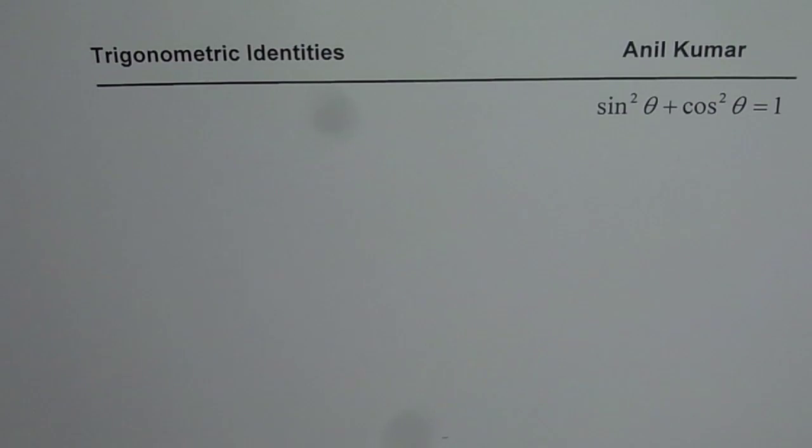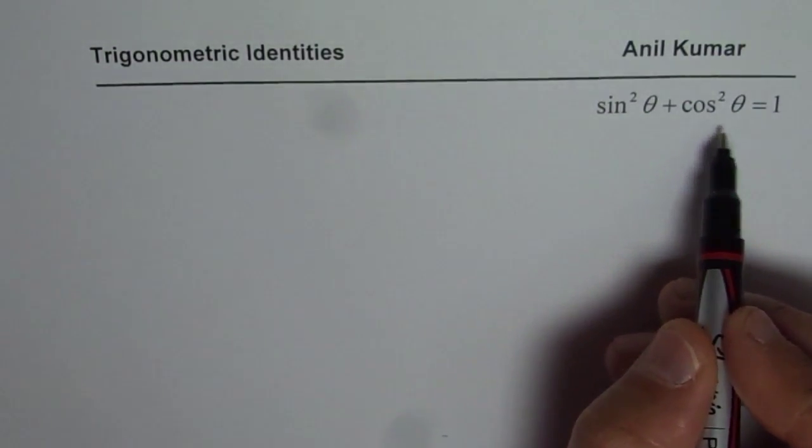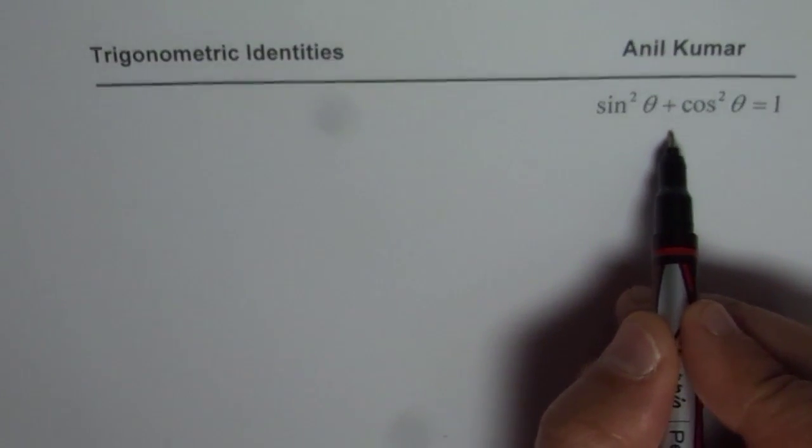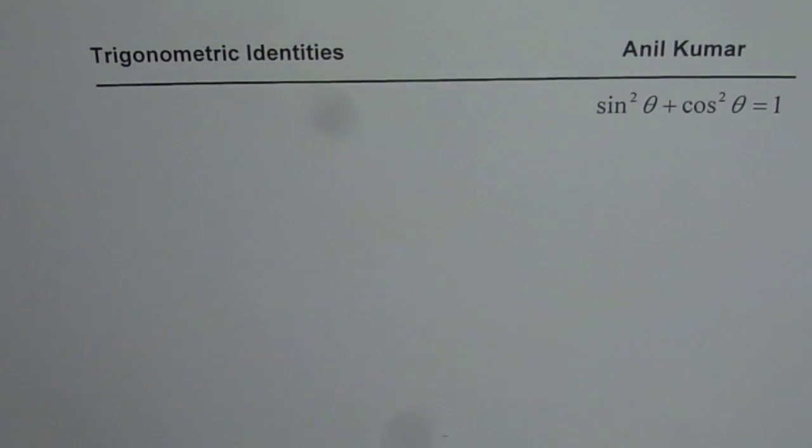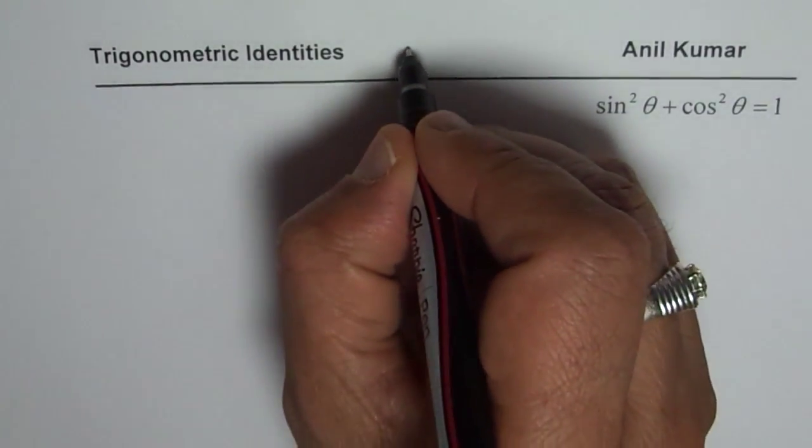Whenever you want to do any trigonometric identity, sine square theta plus cos square theta equals to 1 is the basic Pythagorean trigonometric identity which you should know and you should be an expert on using this particular identity. Let us try to prove this in this particular video.